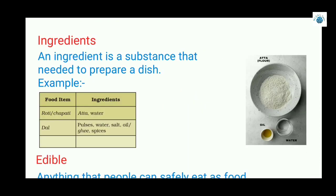An ingredient is a substance that is needed to prepare a dish. For example, to make chapati we need two things: aata and water to make a dough. So the ingredients are aata and water. Similarly, for dal the ingredients will be pulses, water, salt, oil or ghee, and some spices.